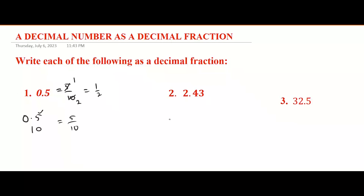For 2.43: put one underneath the decimal point, count digits after it — we have two digits — so add two zeros giving denominator 100. That means 2.43 = 243/100.